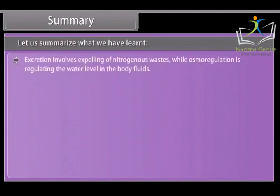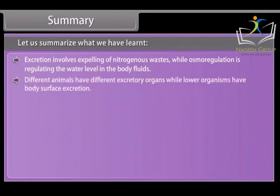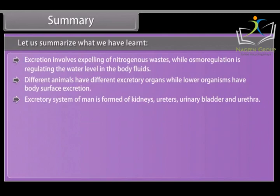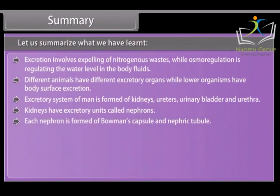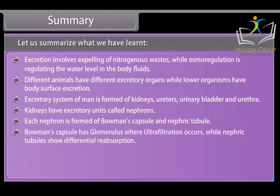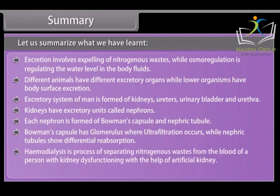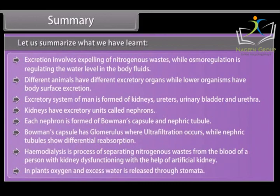Summary: Excretion involves expelling of nitrogenous wastes, while osmoregulation is regulating the water level in body fluids. Different animals have different excretory organs, while lower organisms have body surface excretion. The excretory system of humans is formed of kidneys, ureters, urinary bladder, and urethra. Kidneys have excretory units called nephrons. Each nephron is formed of Bowman's capsule and a nephric tubule. The glomerulus in Bowman's capsule is where ultrafiltration occurs, while the nephric tubules show differential reabsorption. Hemodialysis is the process of separating nitrogenous wastes from the blood of a person with kidney dysfunction using an artificial kidney. In plants, oxygen and excess water are released through stomata.